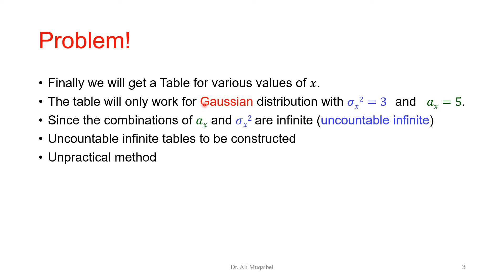To summarize the problem: a table for various values of X will only work for a Gaussian with specific σ_X² and a_X. Since we have an uncountable infinite number of possible scenarios, this is not a good solution. We need to find a better approach using the standard or normalized CDF.